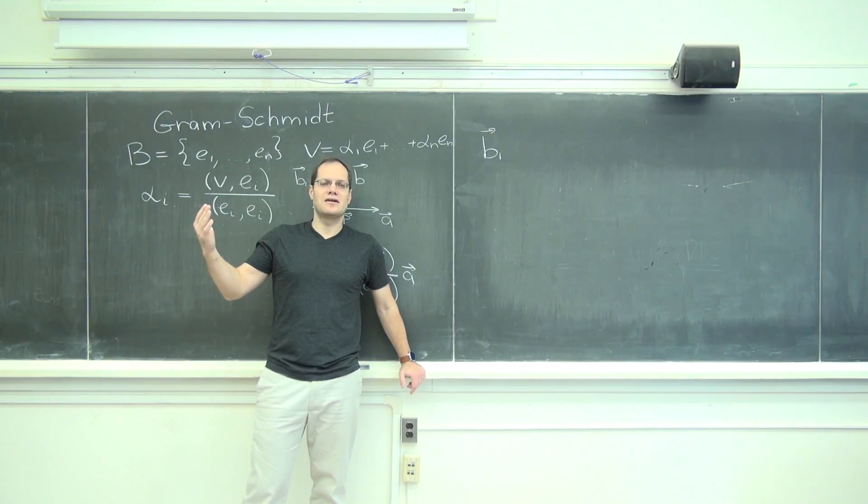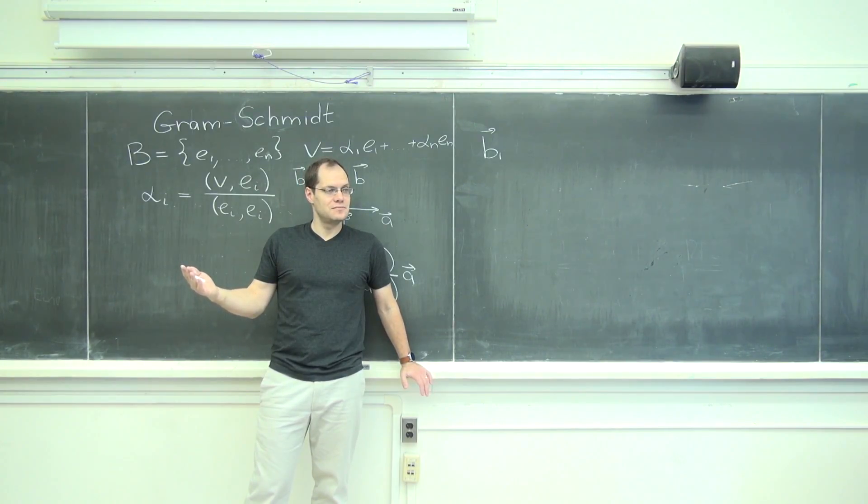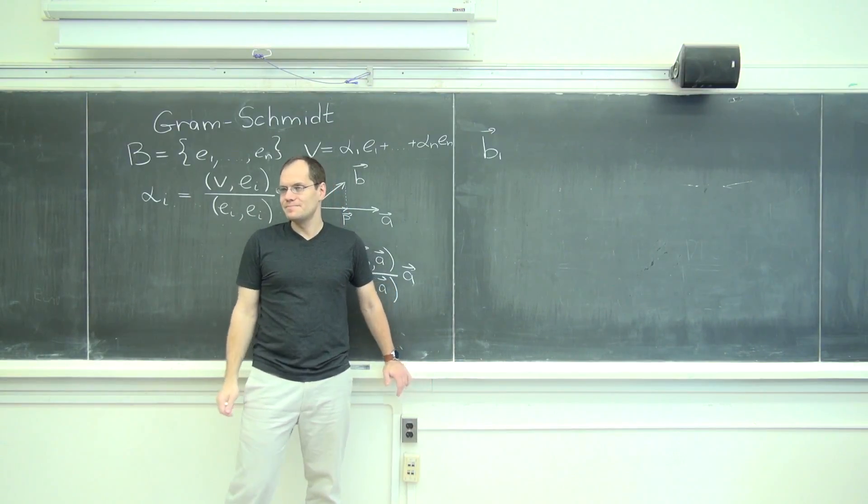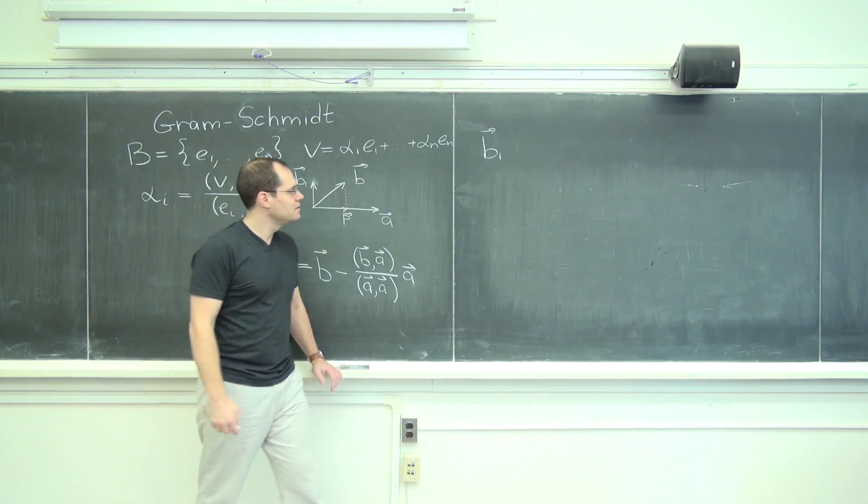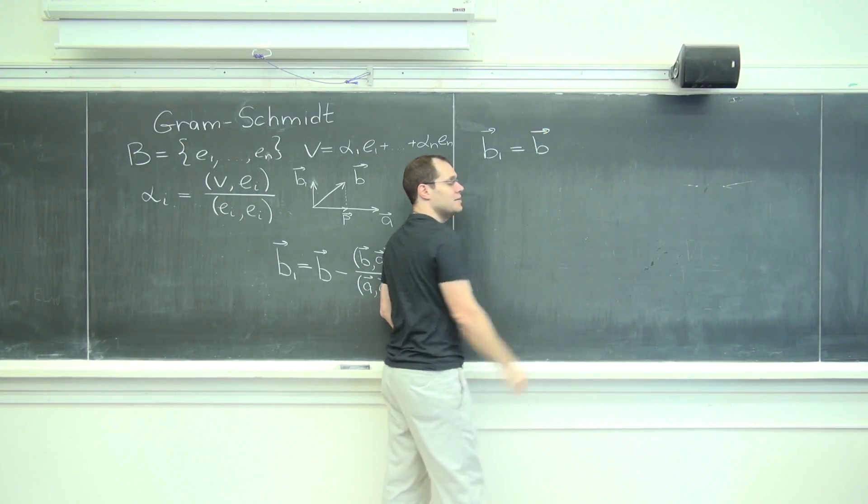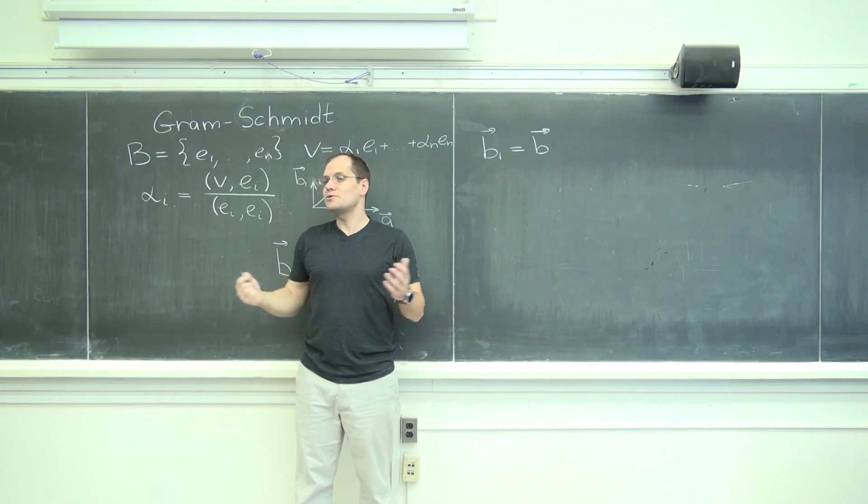What do you think of when you hear subtract a multiple of one from another? Is that Gaussian elimination? Subtracting a multiple of one row from another, yeah, that's a fruitful idea. Let's subtract a multiple, let's modify b. Then you will be able to make it better by subtracting a multiple of a from it.